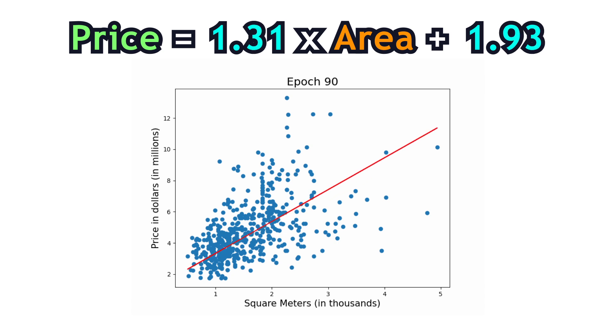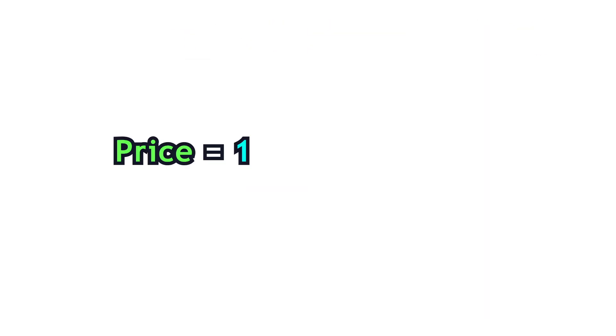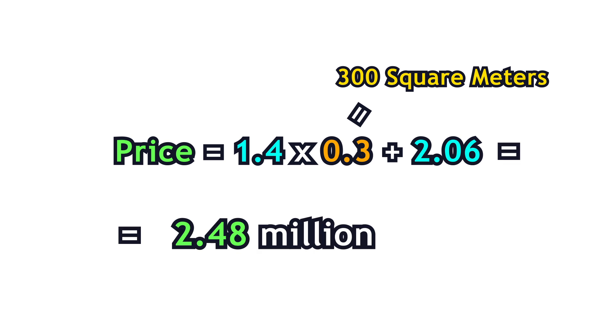The equation converges to this form. Now we can plug the size and estimate the price of a house that is not in the dataset.